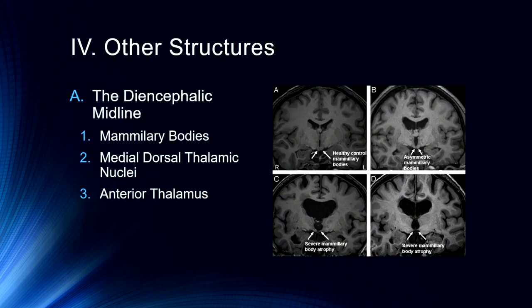Some other structures particularly important for memory include the diencephalic midline, which includes the mammillary bodies, the medial dorsal thalamic nuclei, and the anterior thalamus. The thalamus is our major sensory switchboard, so sensory information is an important component here. What we're looking at in this particular figure is the loss of mammillary bodies — this is a Korsakoff's amnesia patient. Korsakoff's amnesia causes significant damage to the mammillary bodies due to a thiamine deficiency, which is secondary to liver damage.